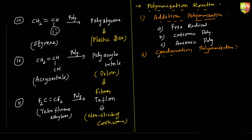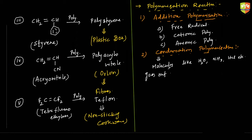In condensation polymerization, molecules like water, NH3, HCl, etc. are eliminated, and the two molecules combine. These are the two types of reactions we have. First of all, we will see free radical polymerization. For cationic and anionic, I will just give you the idea of how it forms. The difference in these three reactions is the intermediate: free radical, cation, or anion — that is the only difference.